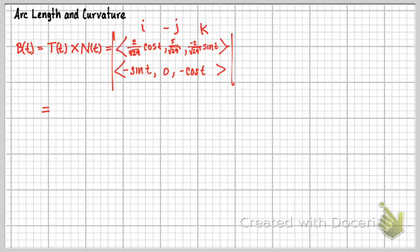So it's equals. Now keep in mind for the first entry, I should say the I entry, we're going to cover up the first column. And we're going to get the product of those things together, the 5 over square root of 29 times negative cos T. And that's going to result in negative 5 cos T over square root of 29. And we've got a minus this here, which is going to give me 0, because 0 times any number is just 0. So that works there.